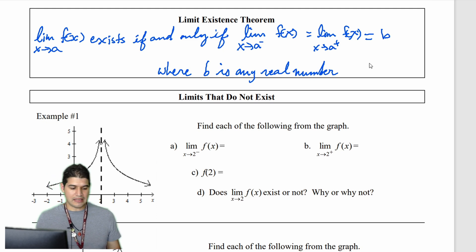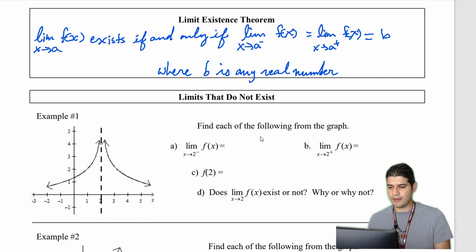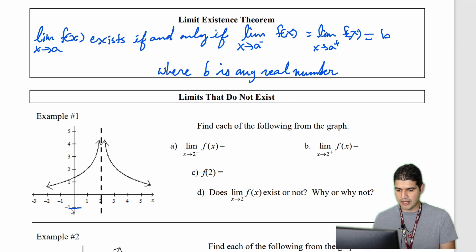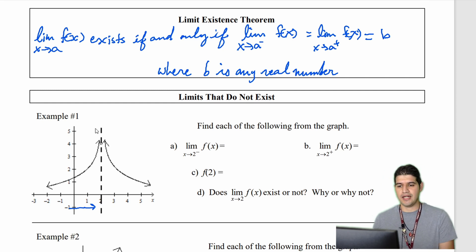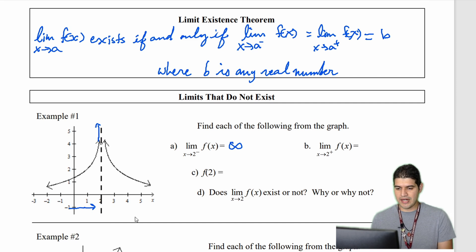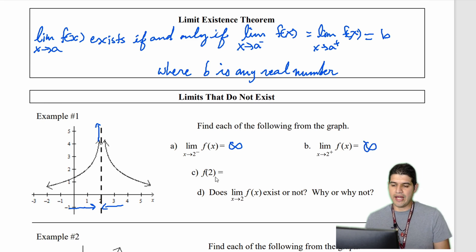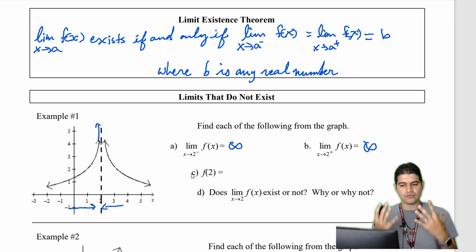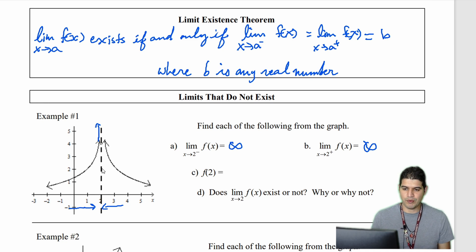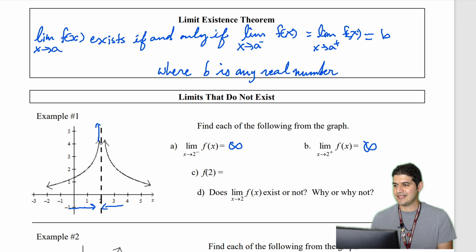In Example 1, we want to find each of the following from the graph. The limit of f(x) as x approaches 2 from the left — following the graph from the left toward 2, it looks like it's going straight up, so the left-hand limit equals positive infinity. Approaching 2 from the right also goes up, so that's also positive infinity. As for f(2), it does not exist because there's no filled-in point at that location.